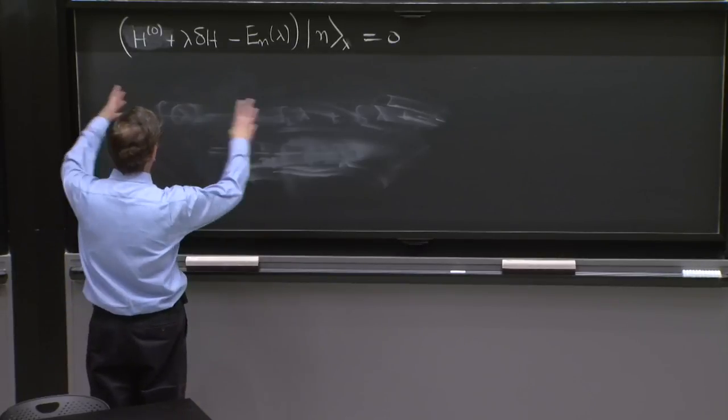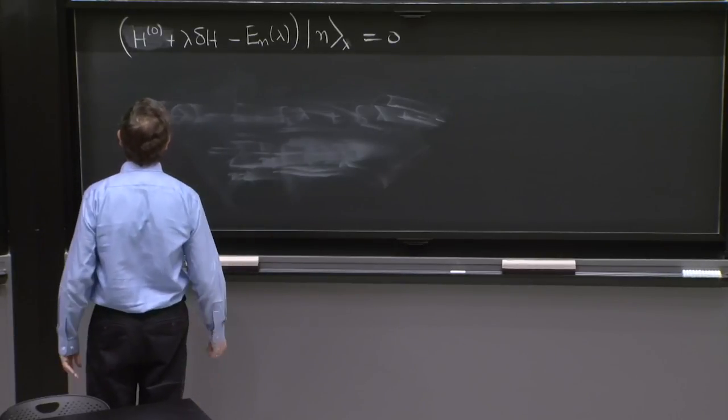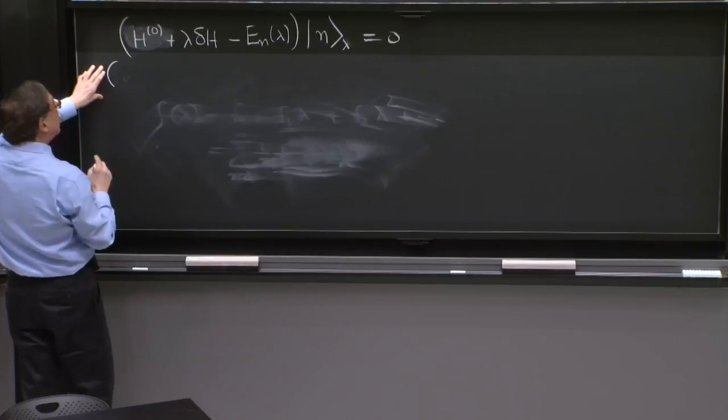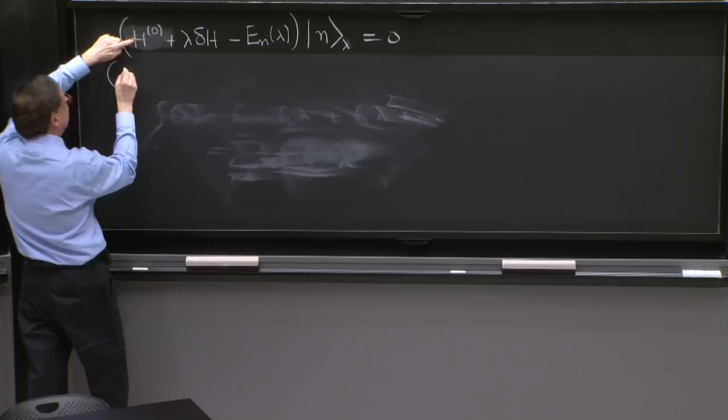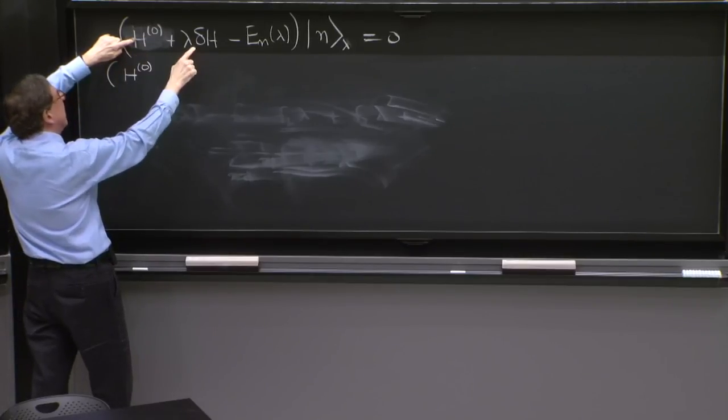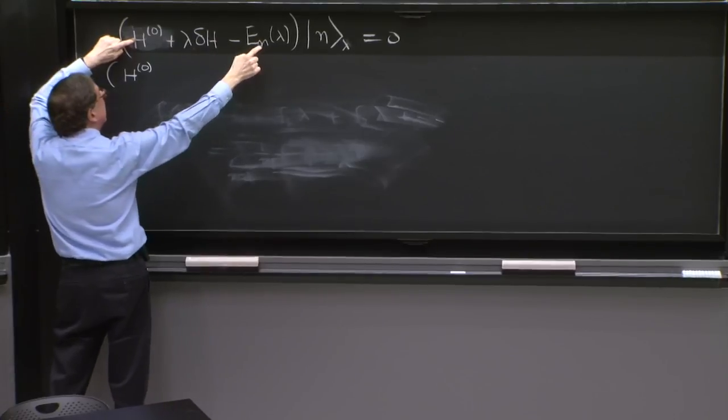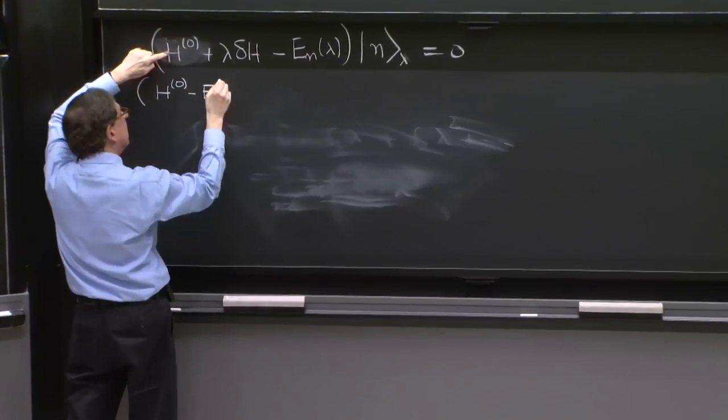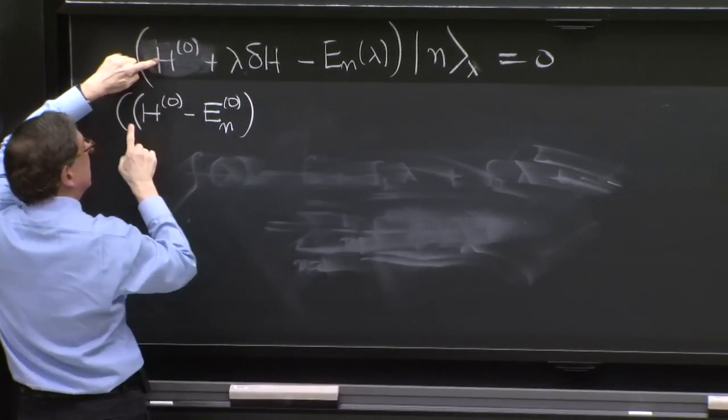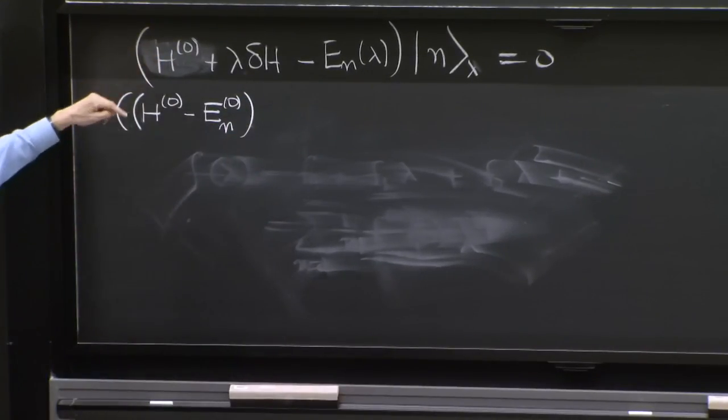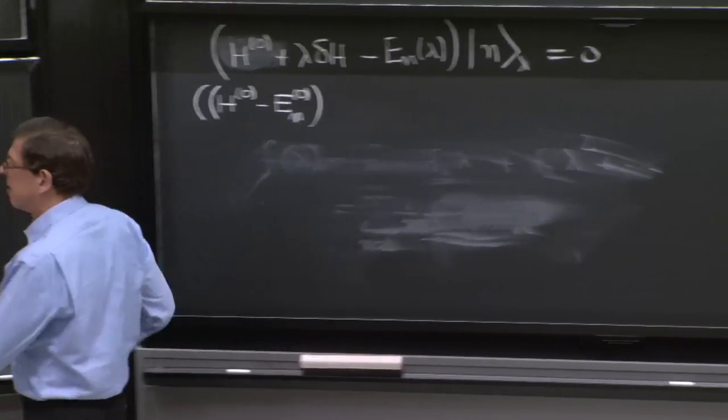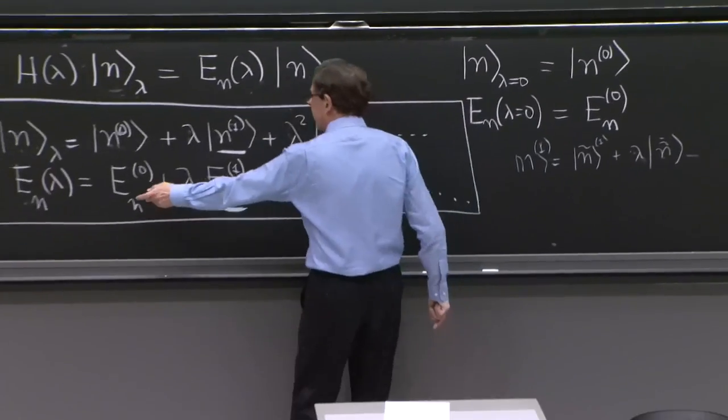And now I'm going to just write it out so that you can see what we get. It's going to take a little bit of writing. Let me collect the terms that have no lambda. It's H0. This has a lambda, but En begins with En0 that has no lambda. So from this parenthesis, this is a term without a lambda. It came from here, En0 is here.